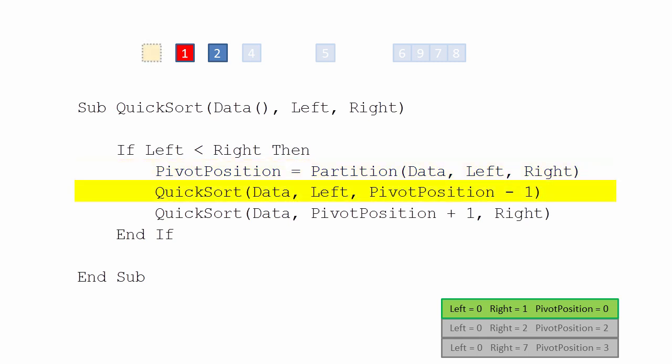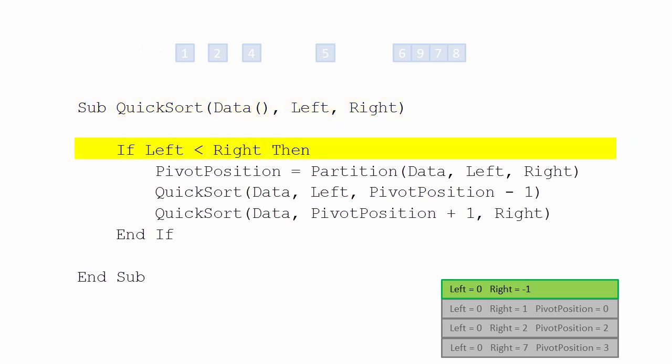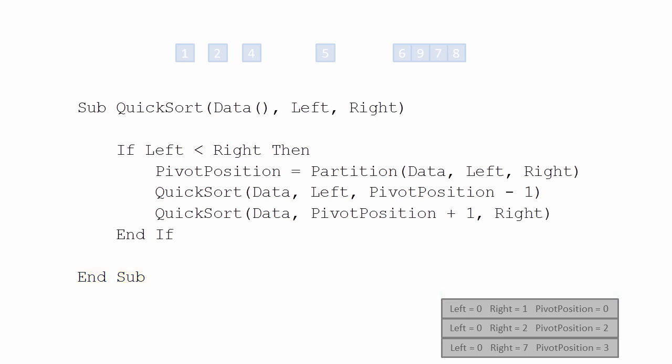Nevertheless, pivot position minus 1 is passed into a new invocation of quicksort. But this invocation has no data to work with. The pointers are compared, and the negative value of the right pointer is found to be smaller than the value of the left. So this invocation is rather short-lived and is removed from the top of the stack.